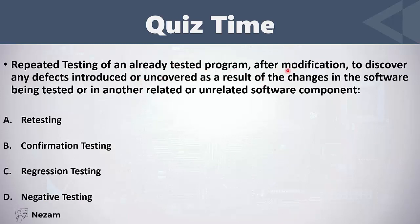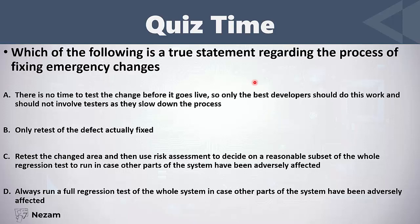'Regression tests are performed to find out if code changes have introduced or uncovered defects' — this is also correct. The definition: repeated testing of an already tested program after modification, to discover any defects introduced or uncovered as a result of changes in the software or in another related or unrelated software component. This is the definition of regression testing.